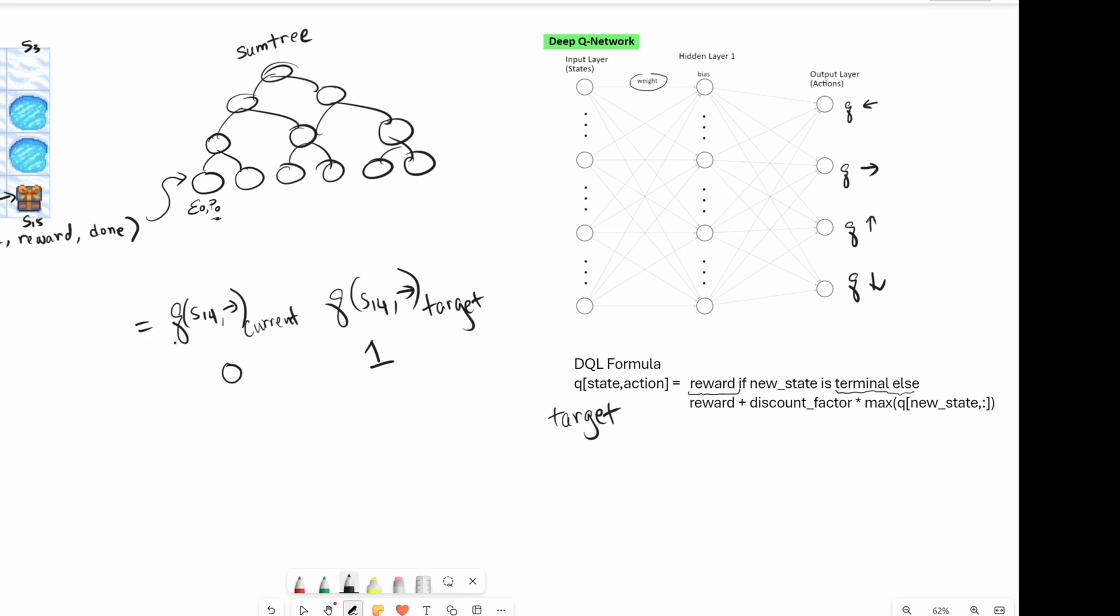Now there's something called a temporal differencing error, and it's the difference between the current and the target, or target minus current. It doesn't matter which minus which. So this is something that we can use as an indicator to set our priority. So let me work this out. This error is going to be negative one.